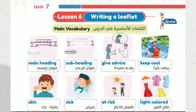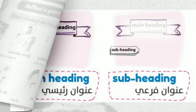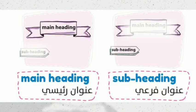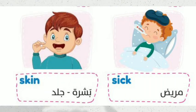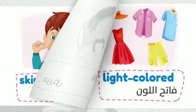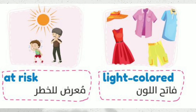Unit 7, Lesson 6: Writing a leaflet. Main vocabulary — main heading, subheading, give advice, keep cool, skin, sick, at risk.